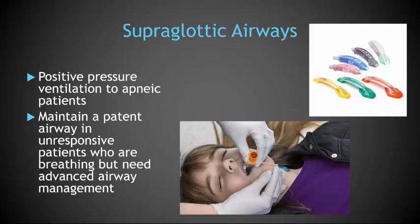Your supraglottic airways — there are several devices that you can use. These supraglottic airways are available for use in the pediatric patient. These devices are used to provide positive pressure ventilation and they help you maintain a patent airway in unresponsive patients who are breathing spontaneously but who do not require advanced airway management with an endotracheal tube.